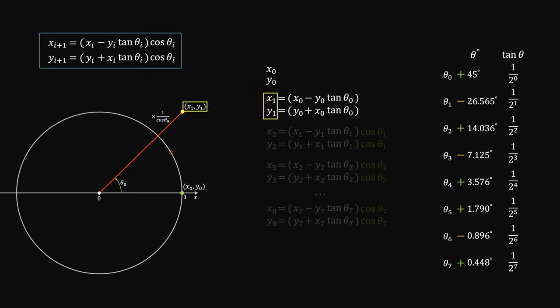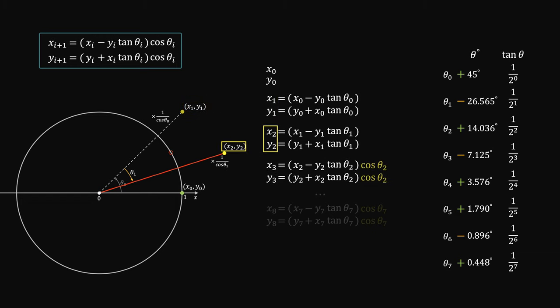Now, if we use these scaled coordinates as new inputs, and skip the cosine multiplication, then we're doing another scaled rotation from x1y1. The scaling factor is 1 over the cosine. Using this as the input to the next formula, and skip the multiplication again, we did another scaled rotation from x2y2.